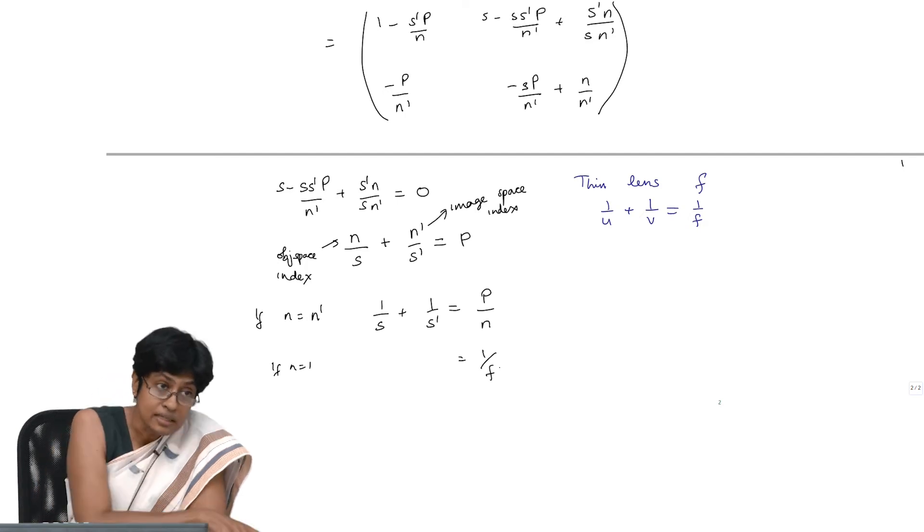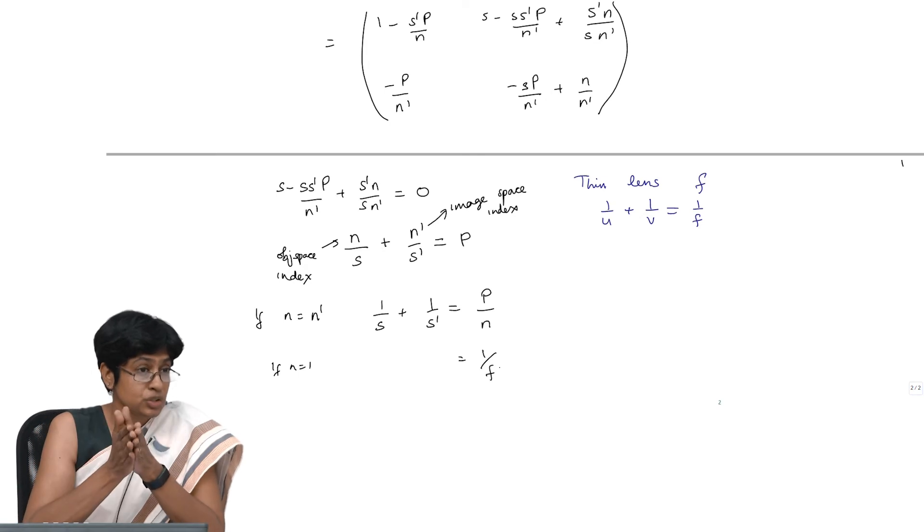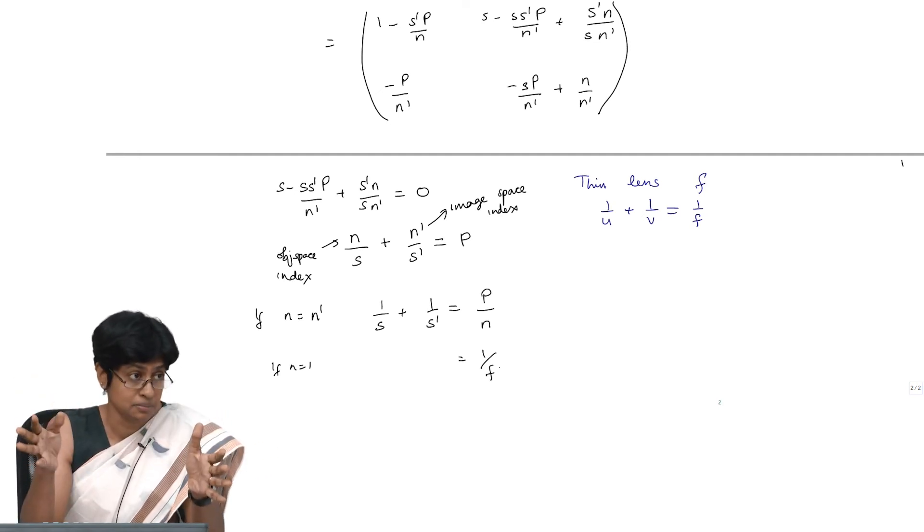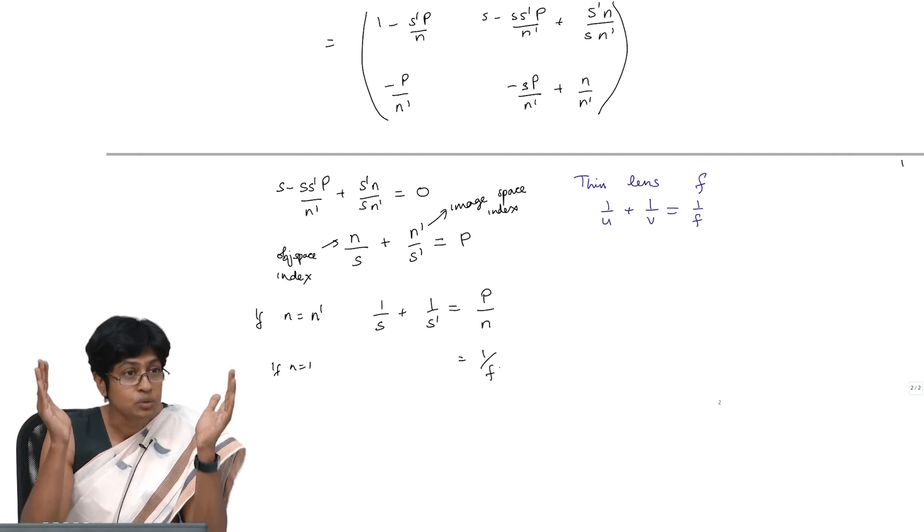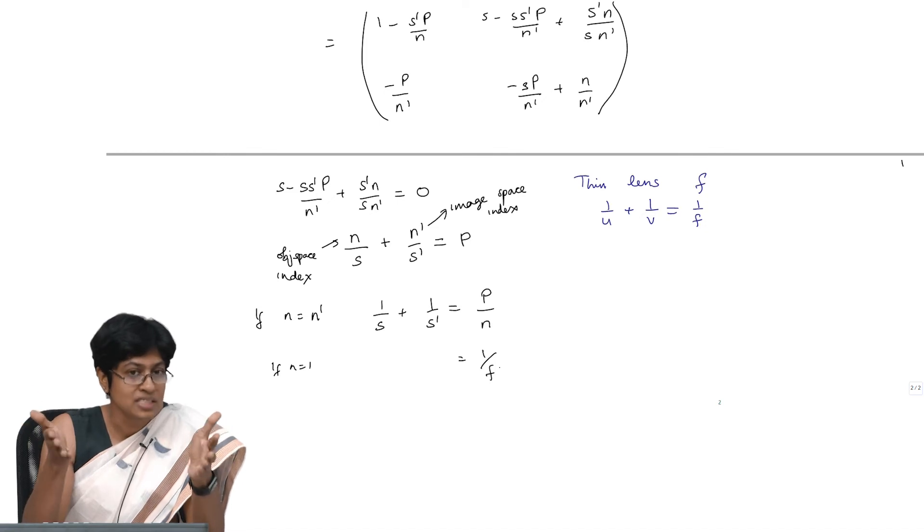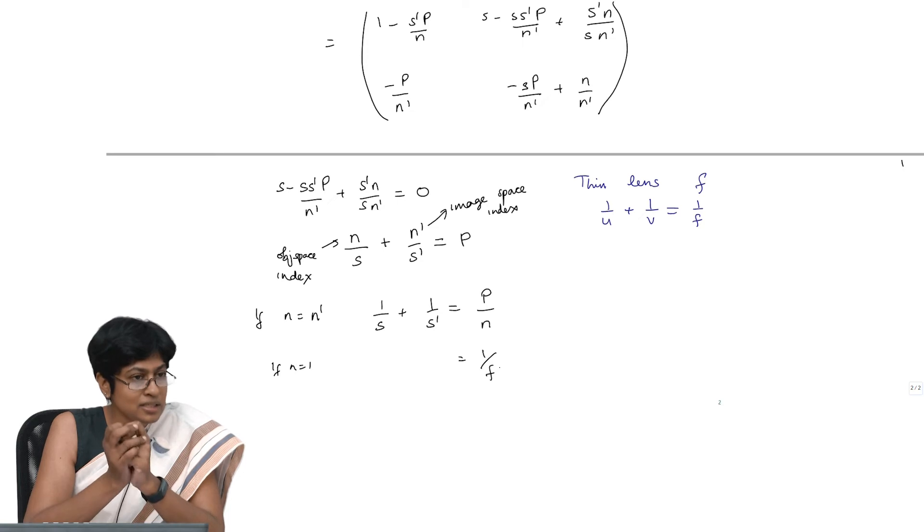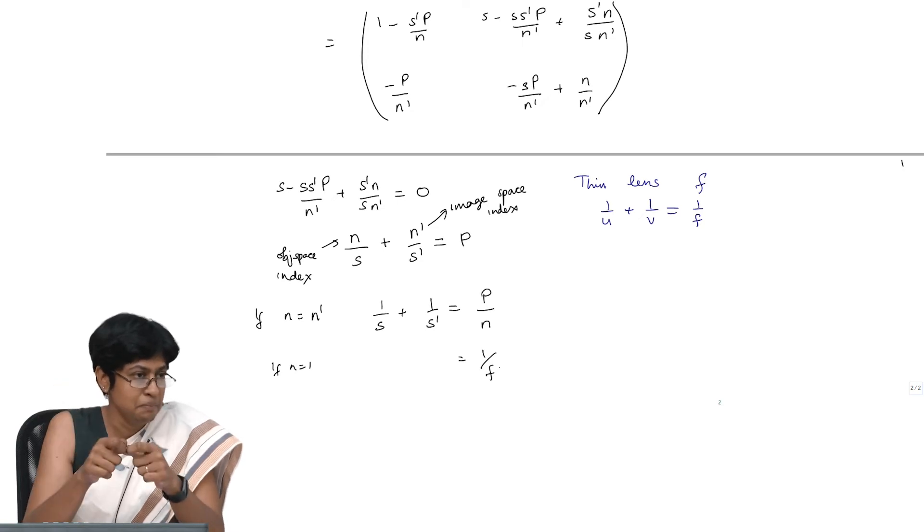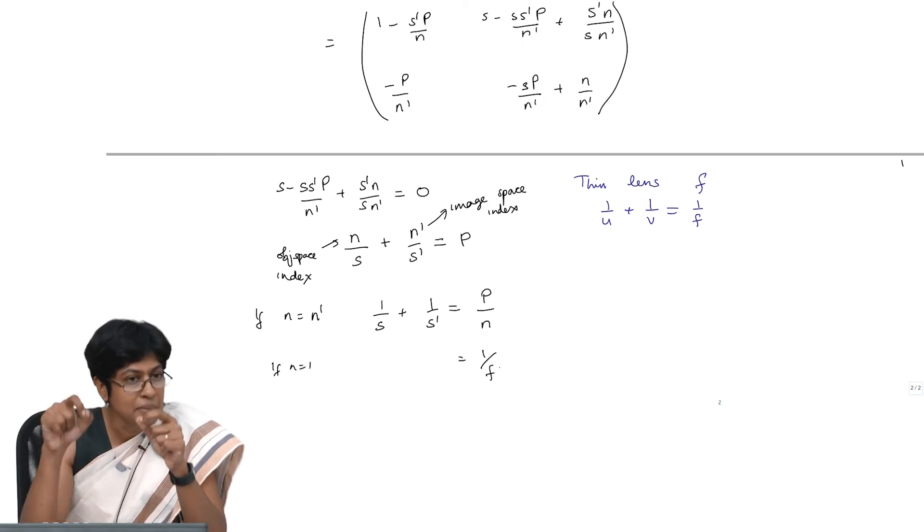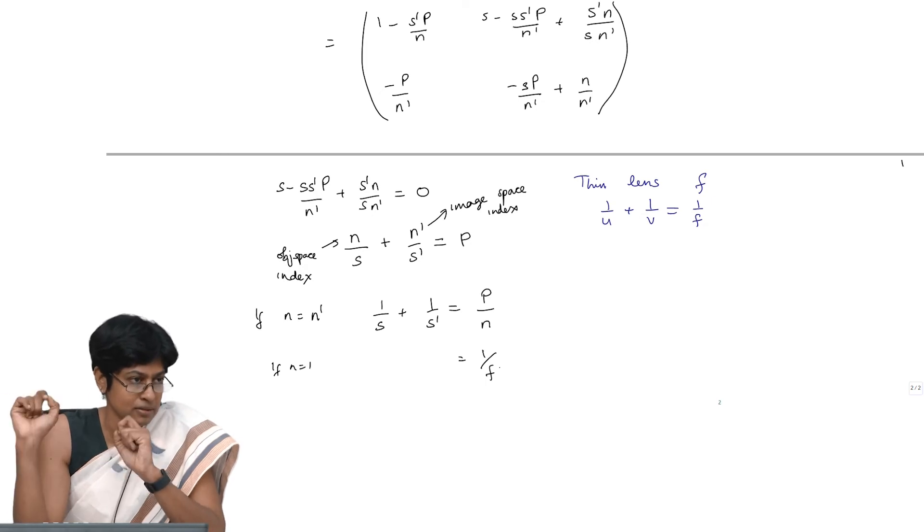Because you are saying that I can take an optical system which has 100 lenses in it with all the spaces in between, and I can now deal with it as if it were a thin lens. The important point to take is that any measurements that I make will now be made from the principal planes.